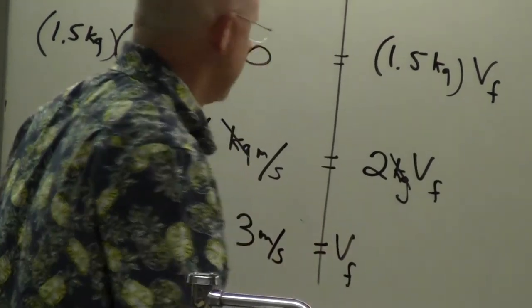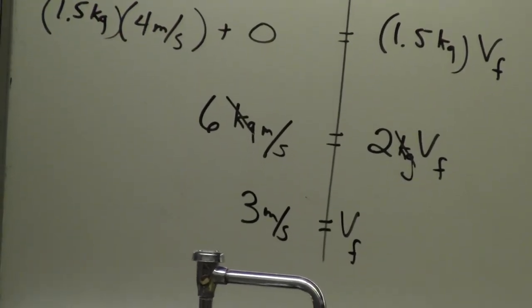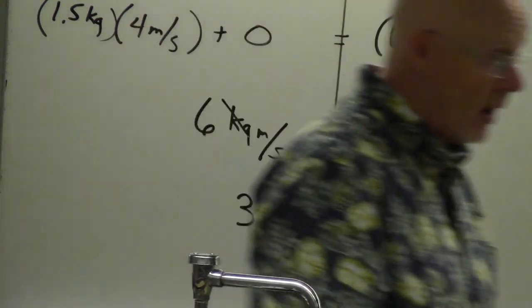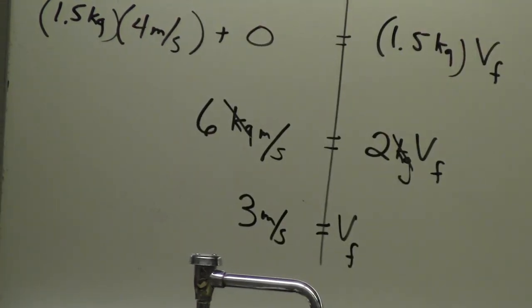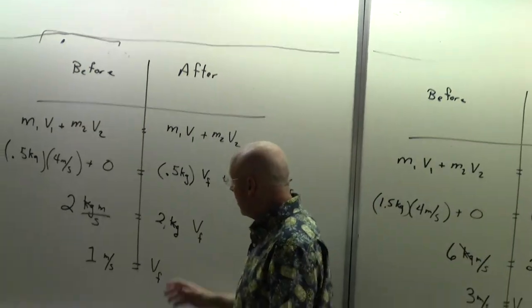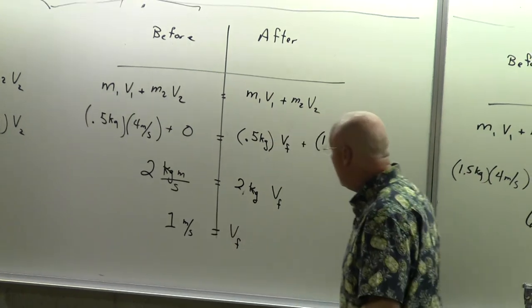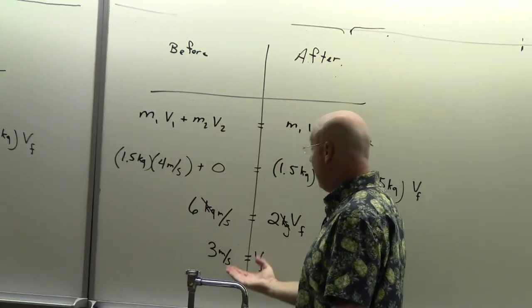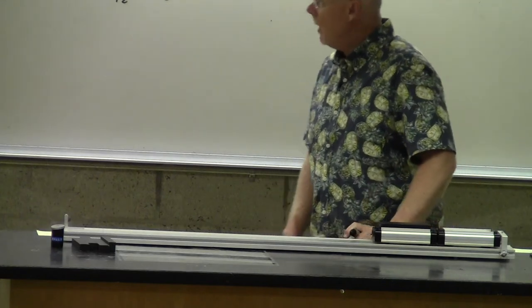The final speed is 3 meters per second. That one barely slows down — coming in at 4 and going out at 3. It makes sense given the much greater mass of the moving cart. Compare that to the previous example where the lighter cart came in at 4 and slowed all the way down to 1. No matter what, momentum before equals momentum after.